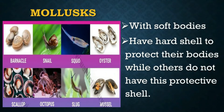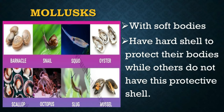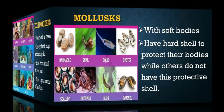Mollusks are invertebrates with soft bodies. Some mollusks have a hard shell to protect their bodies while others do not have this protective shell. Among the mollusks are snails, mussels, squids, and octopus.